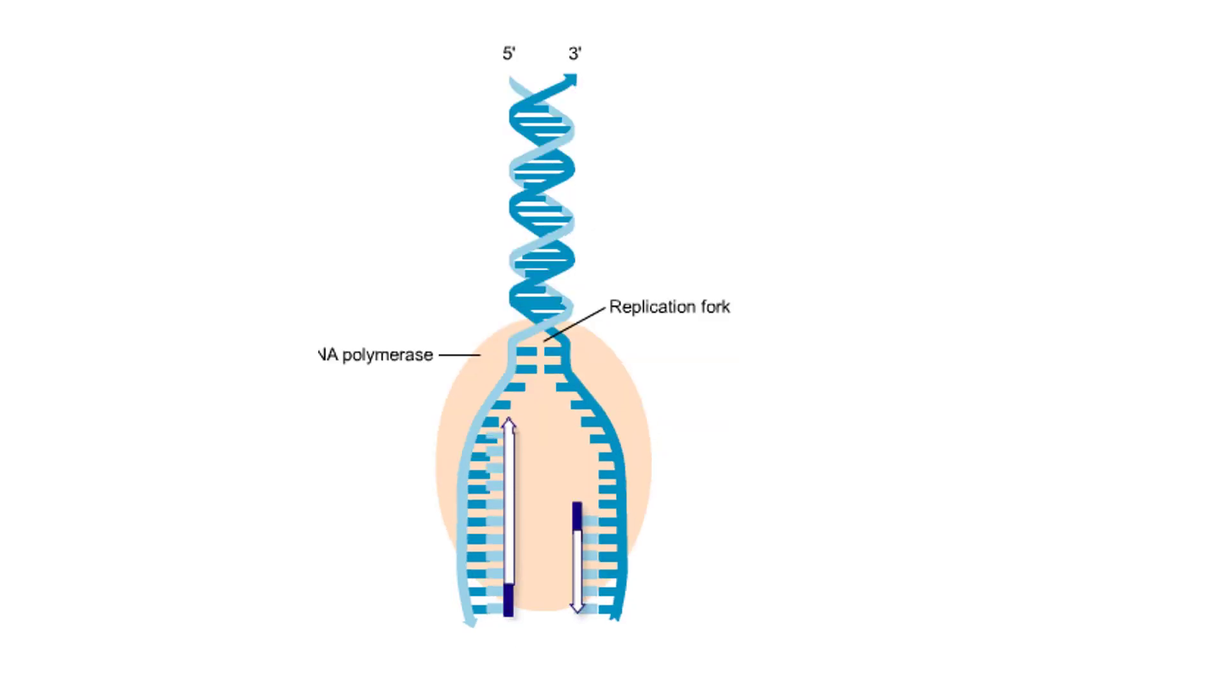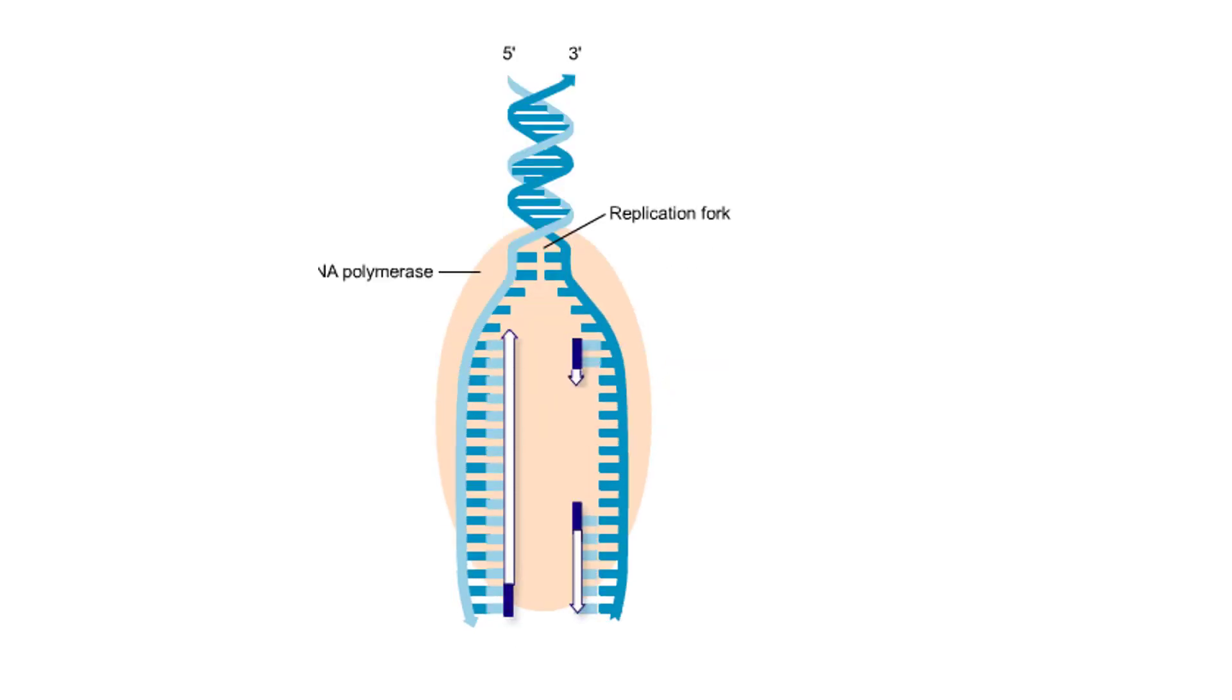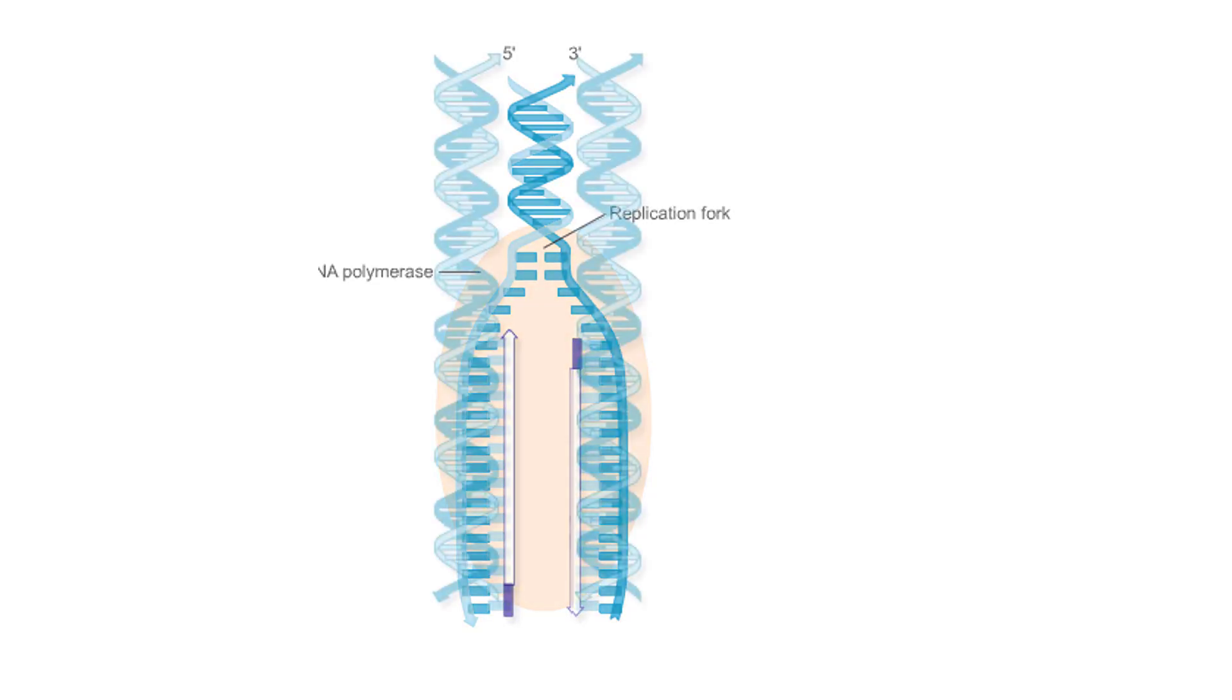As the replication fork advances along the length of the DNA molecule, continuous and discontinuous synthesis of the two new strands occurs until two complete double-stranded daughter DNA molecules are produced.